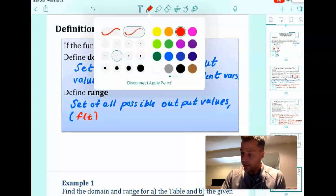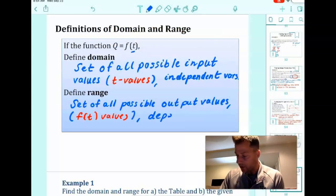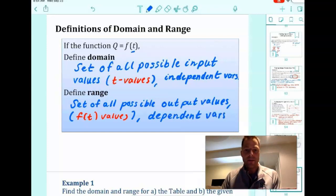Those are our f(t) values. The outputs. The dependent variable, right? So there you go. There's our definition that we're using. It doesn't have to be super fancy, right? We just have to know what is the domain. It's my possible inputs.